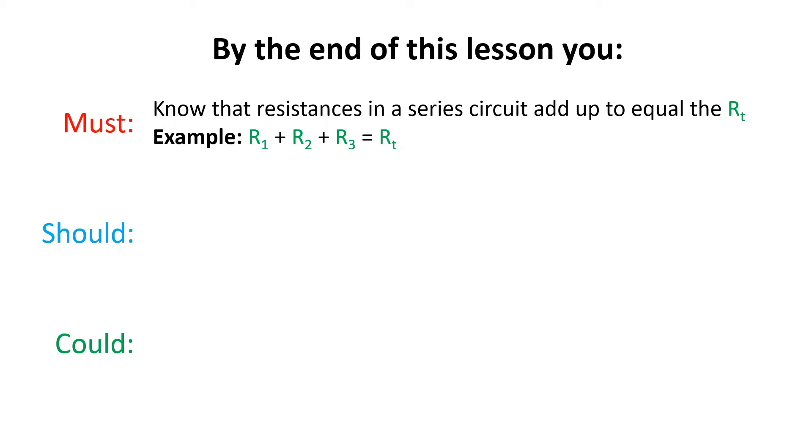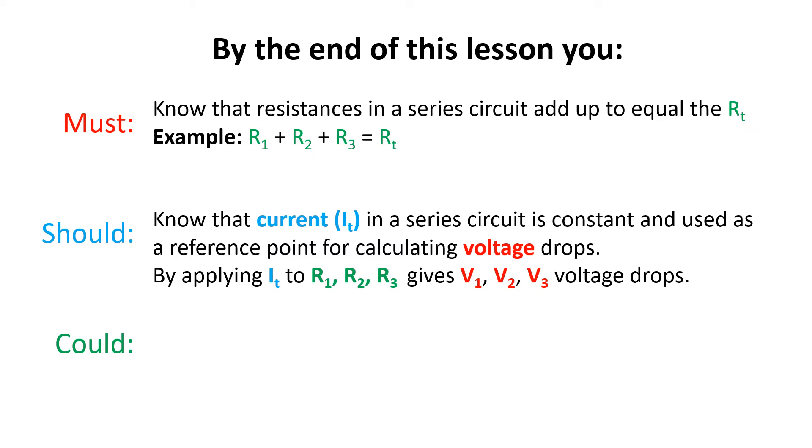You should know that the current flowing in a series circuit is constant. As such, I will refer to that as the current total or IT for short, and we use that as a constant reference point to calculate voltage drops across the individual resistances.